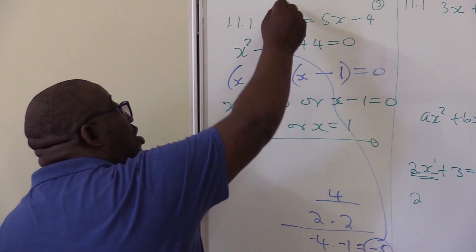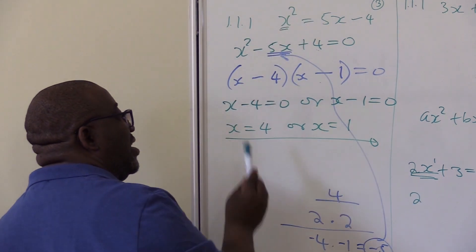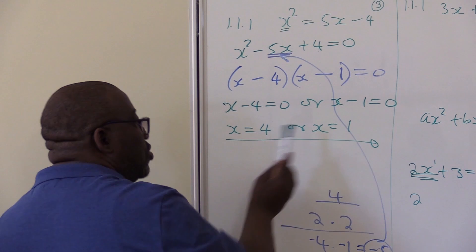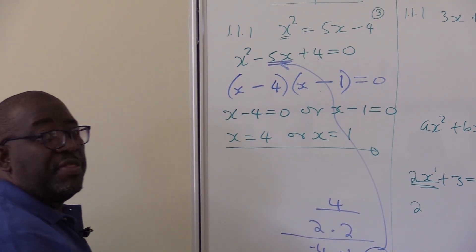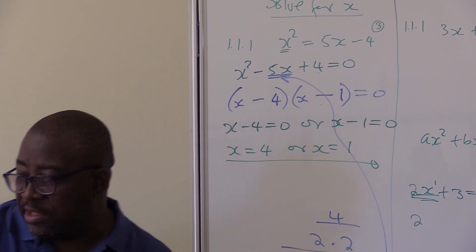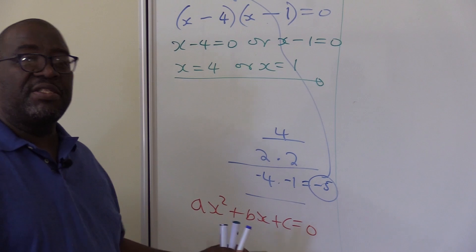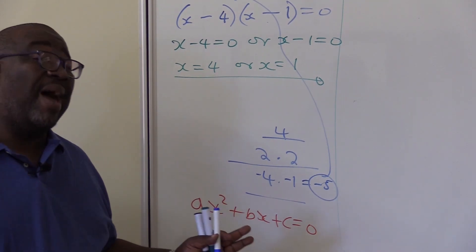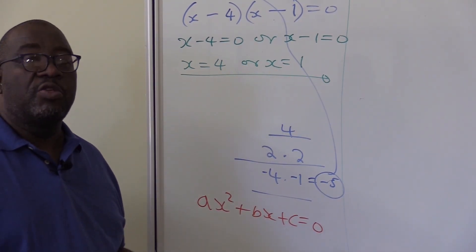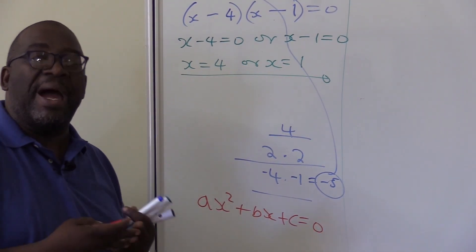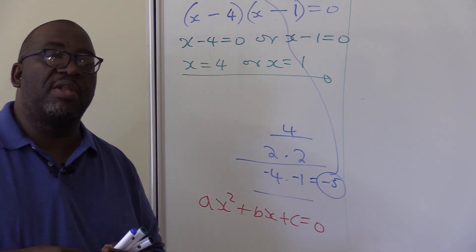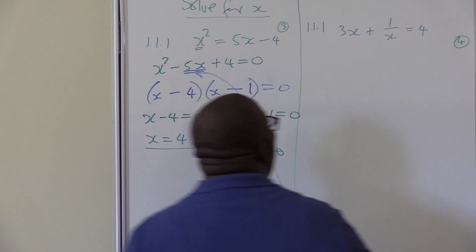How many solutions do I expect? 2. Did I get 2 solutions? Yes, 1 and 2. So this is how you go about factorizing. This is done in Grade 9 but it comes out in Grade 12, so these are guaranteed marks. Make sure that you get these maximum marks.